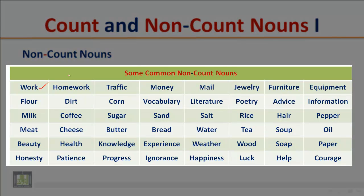Some common non-count nouns include: work, homework, traffic, money, mail, jewelry, furniture, equipment, flour, dirt, corn, vocabulary, literature, poetry, advice, and information.